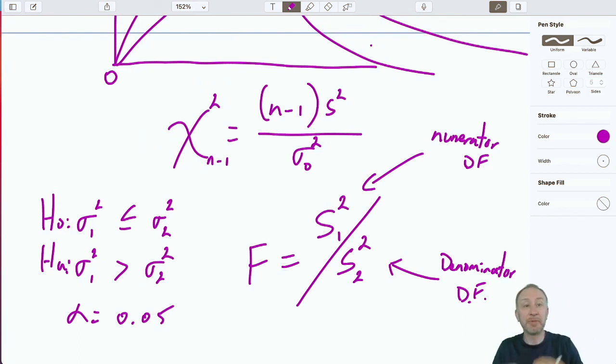And we're going to have denominator degrees of freedom because that chi-squared in the denominator has n-1 degrees of freedom. We might have samples of different size. We'll have different degrees of freedom, numerator and denominator. It doesn't really complicate things much.